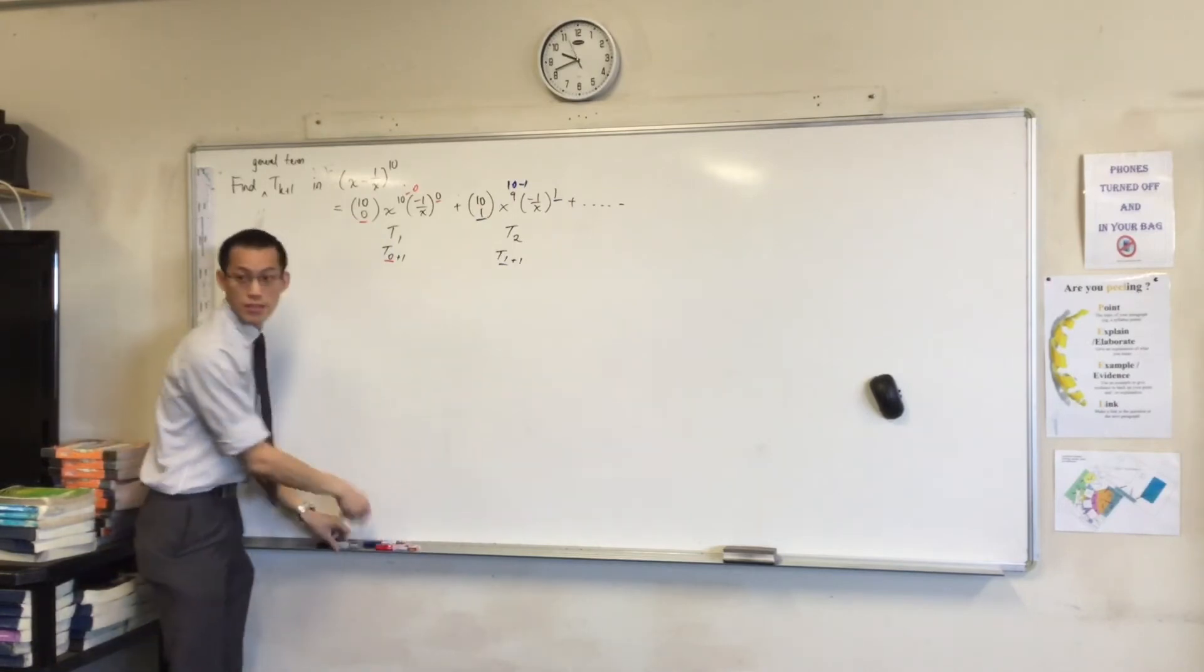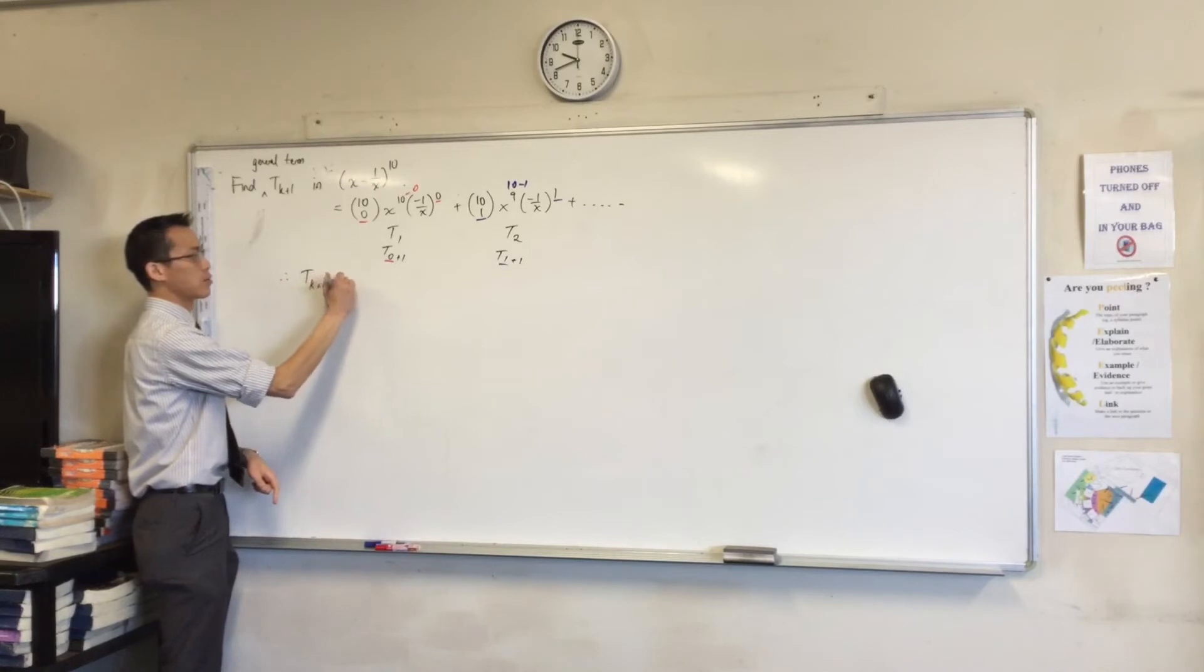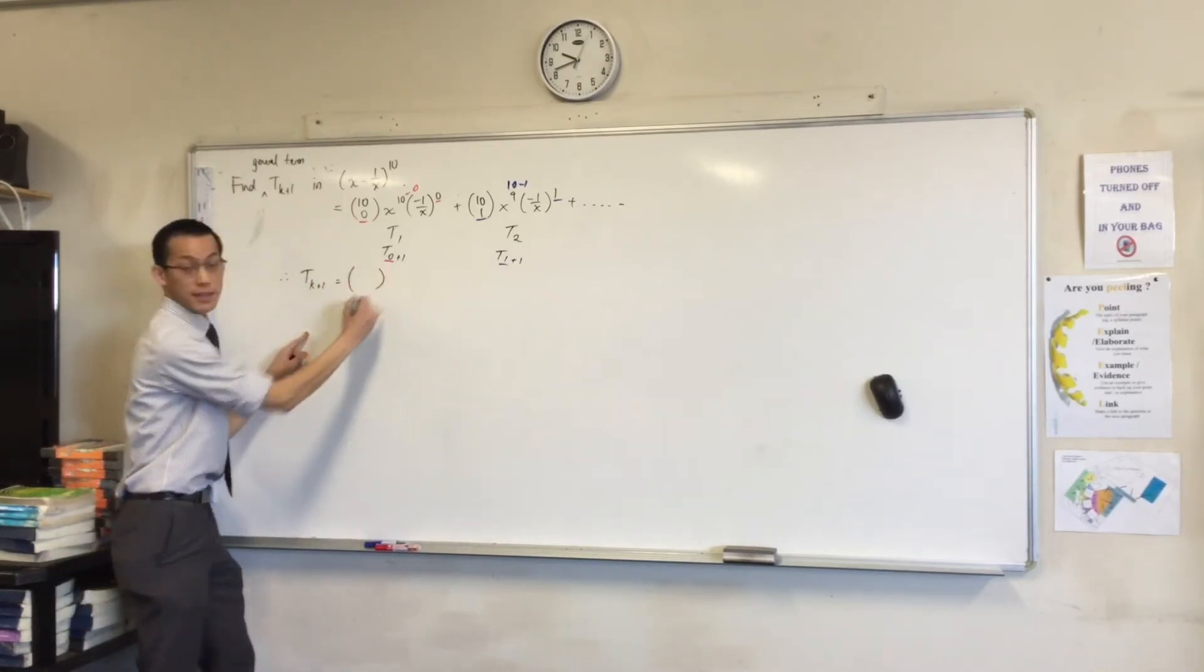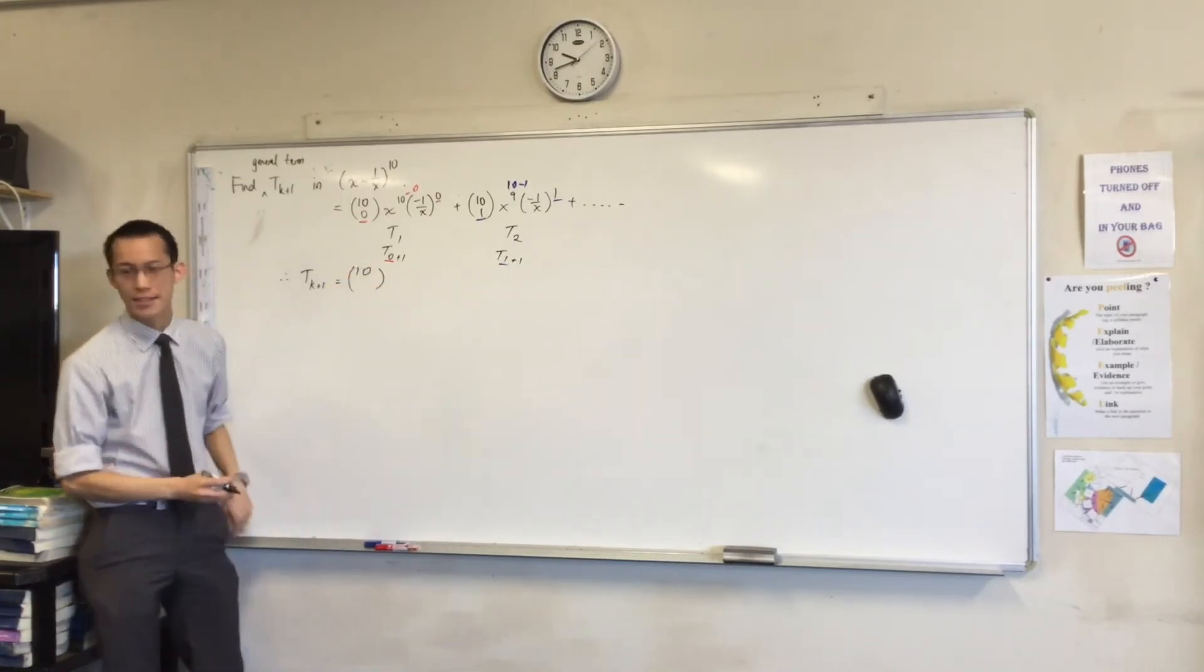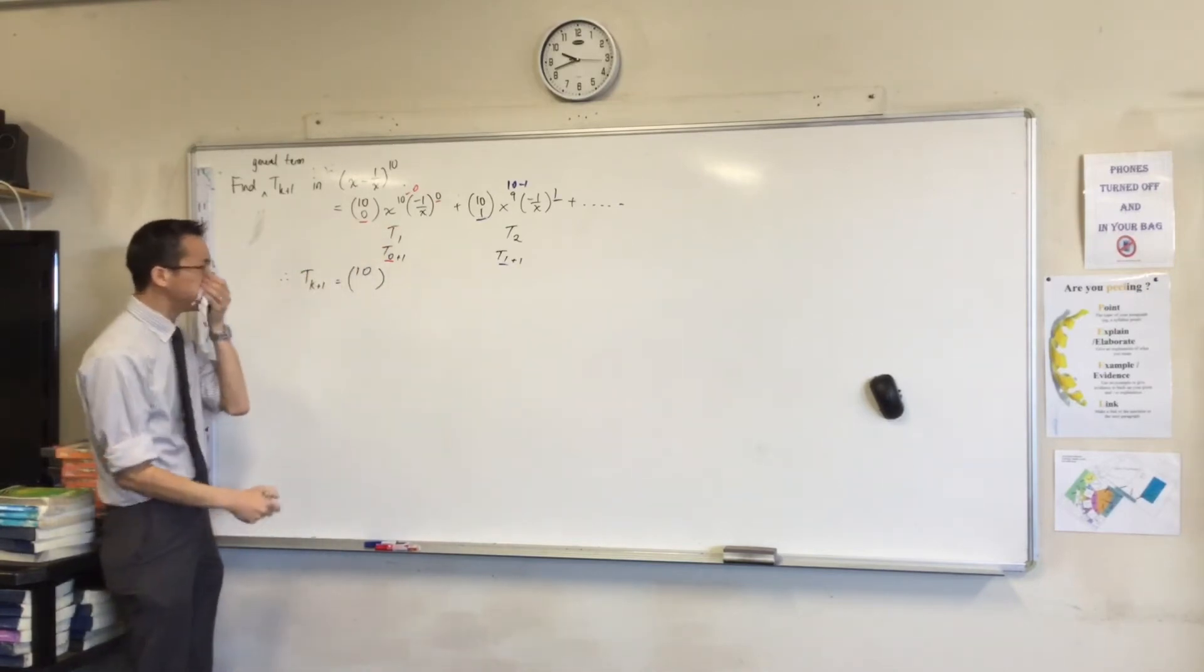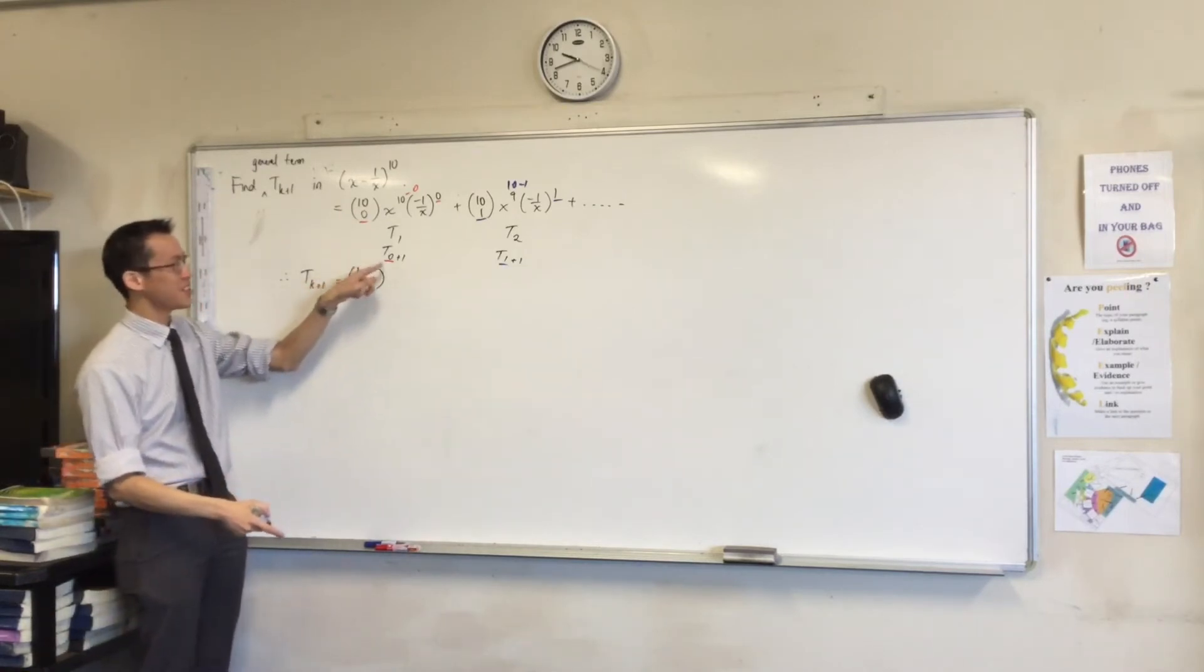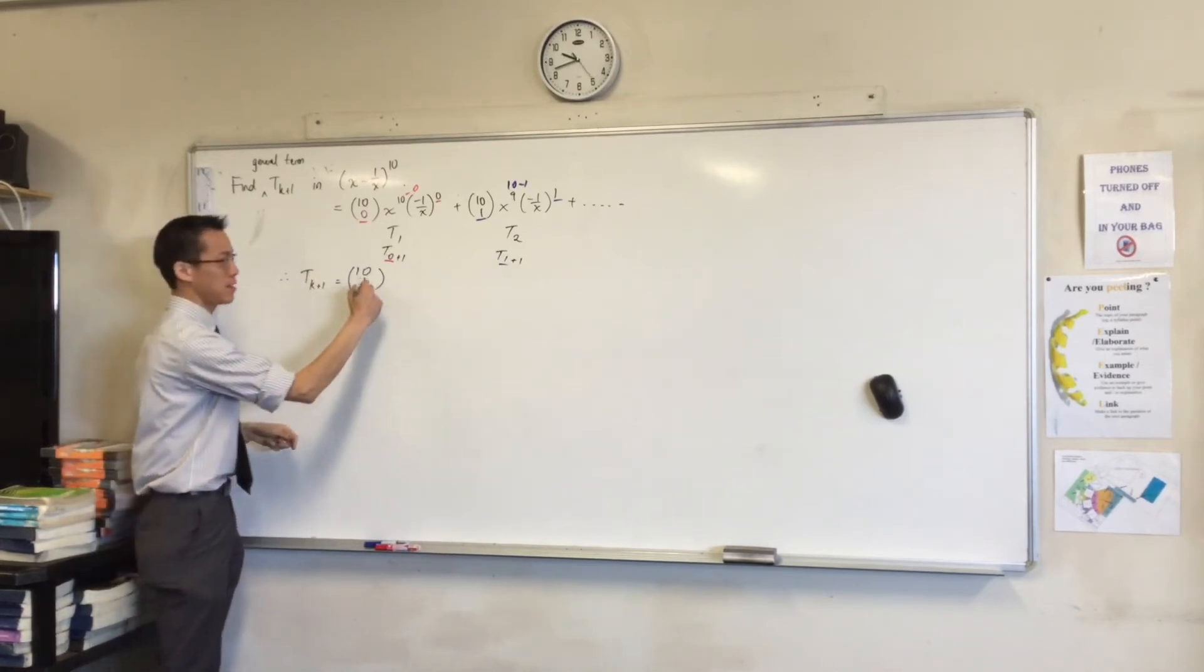So now I can use, that's all I need. I can now say, therefore, term k plus 1 is going to be equal to, look at the parts that are the same every time. There's always a 10 there. Every term has that. But depending on which term you're on, this number's different. What is that number? In the t0 plus 1, it's 0. So tk plus 1, it's going to be k.